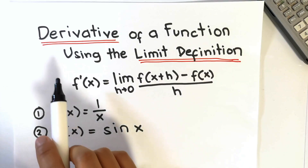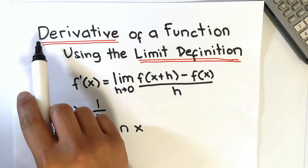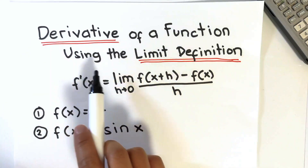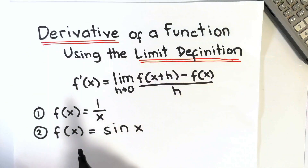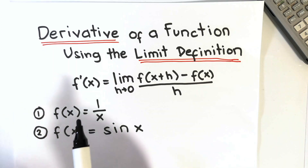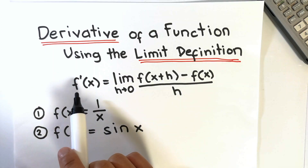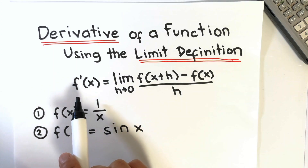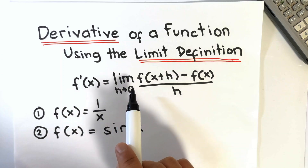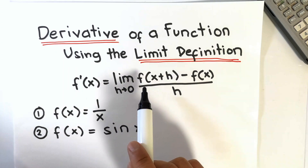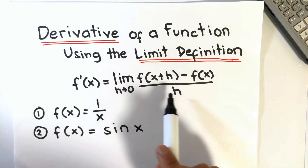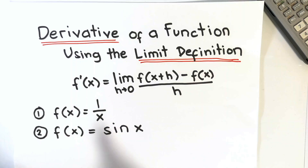Hello, in this video I will show how to find the derivative of a function using the limit definition. The derivative of f of x, denoted as f prime of x, is equal to the limit of f of x plus h minus f of x over h, as h approaches 0.